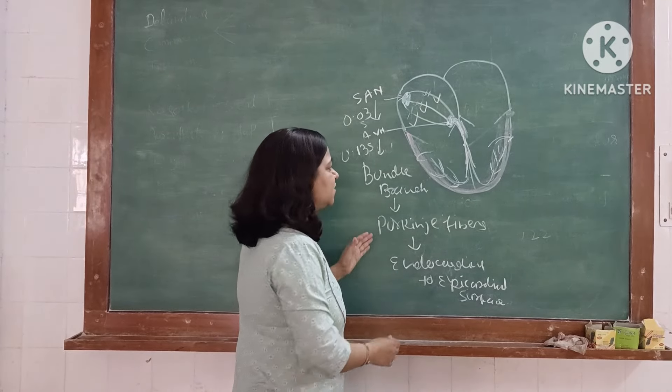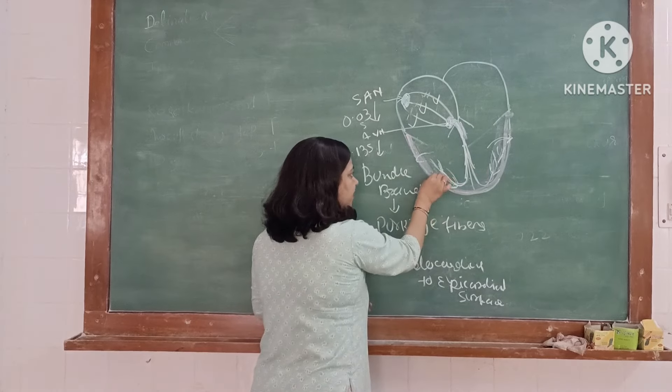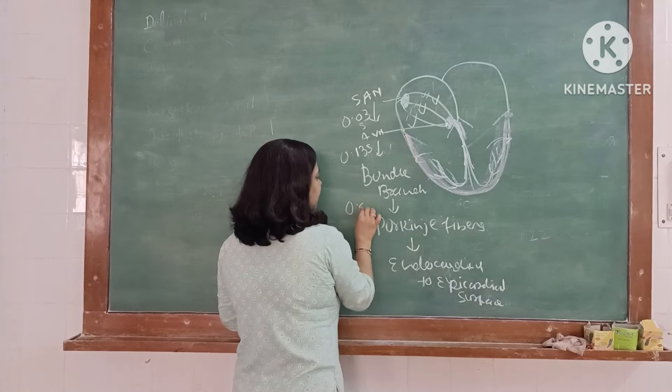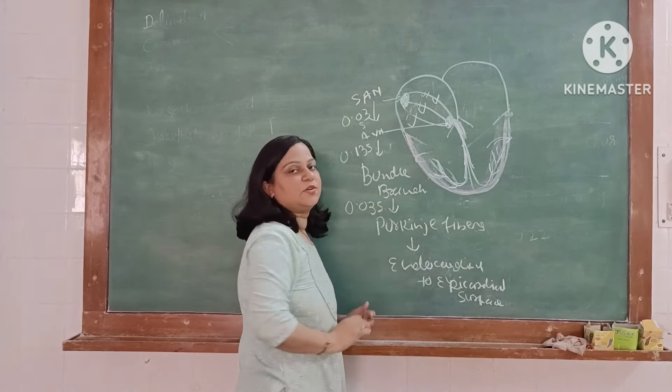From bundle branch, impulse reaches the Purkinje fibers. Time taken for this is 0.03 second.